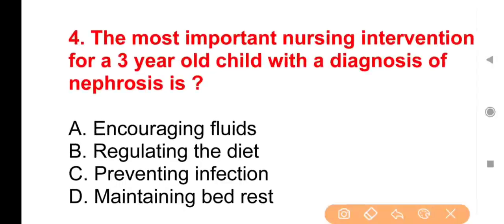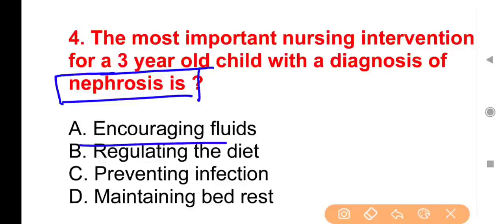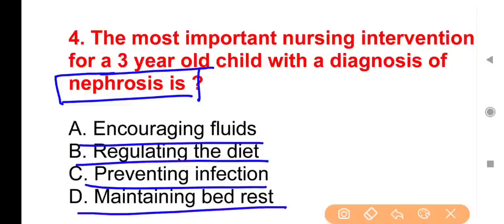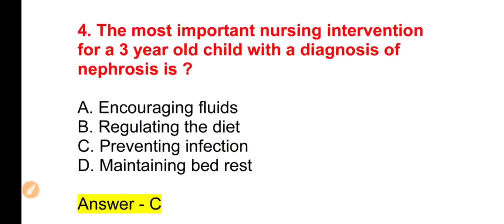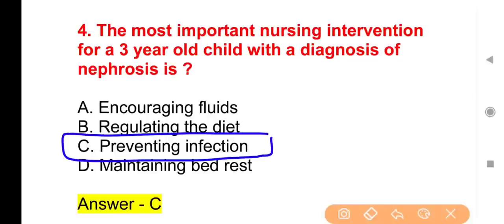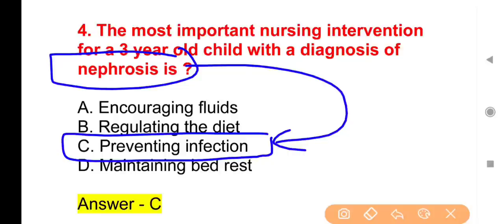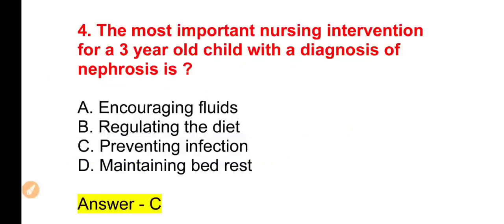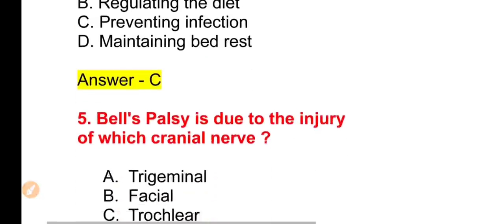Question number 4: The most important nursing intervention for a 3-year-old child diagnosed with nephrosis — Option A, Encouraging fluids; Option B, Regulating the diet; Option C, Preventing infection; Option D, Maintaining bed rest. The right answer is Option C — Preventing infection. Due to nephrosis, the child's immunity is suppressed, so infection prevention is most important.